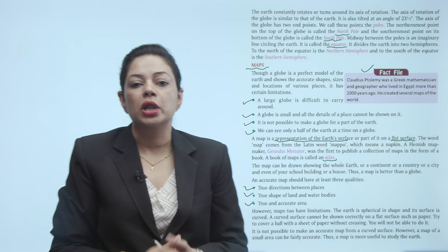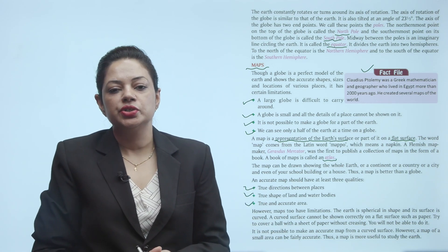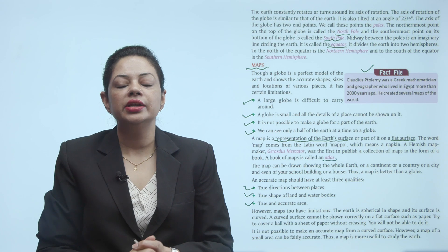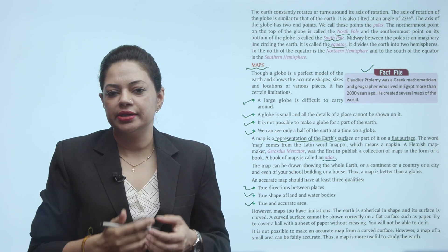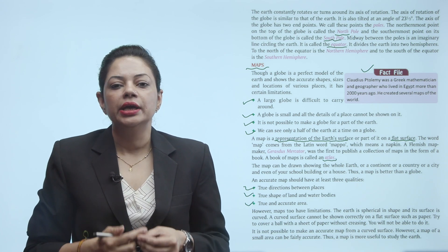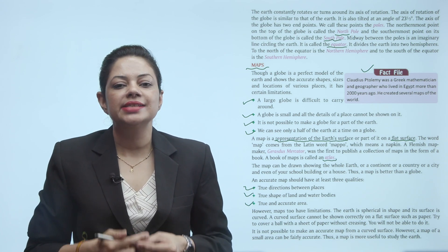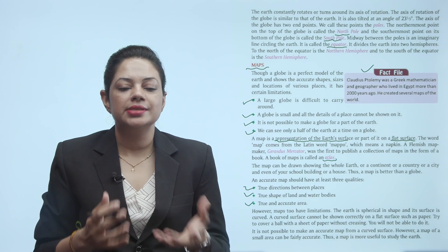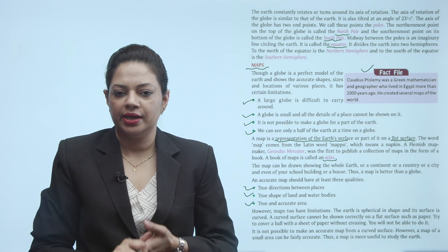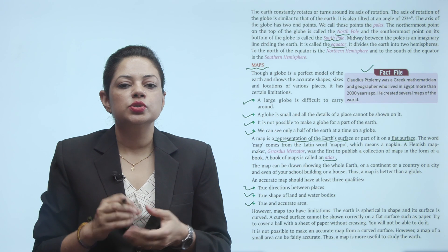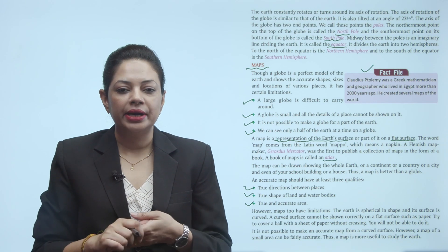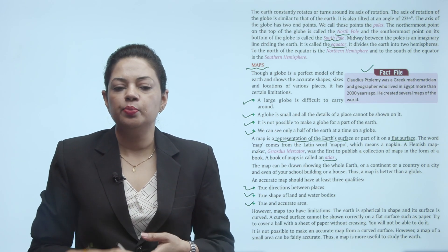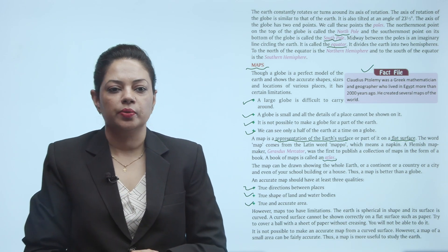Claudius Ptolemy was a Greek mathematician and geographer who lived in Egypt more than 2000 years ago. He created several maps of the world. Unhone bahut saare maps banaye hain world ke, aur woh mathematician the jo Egypt mein 2000 saal se zyada pehle rehte the.